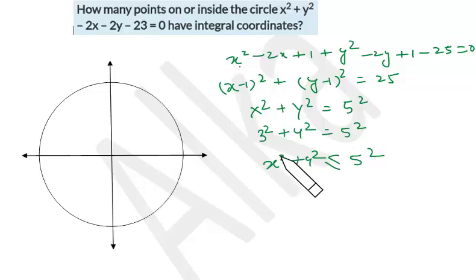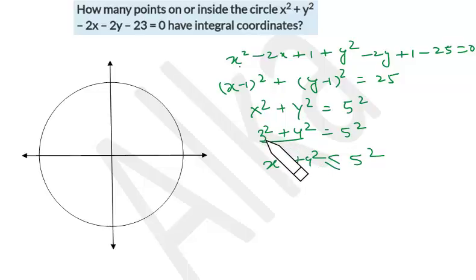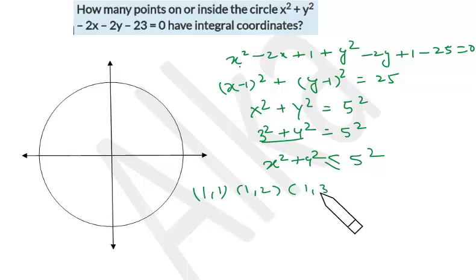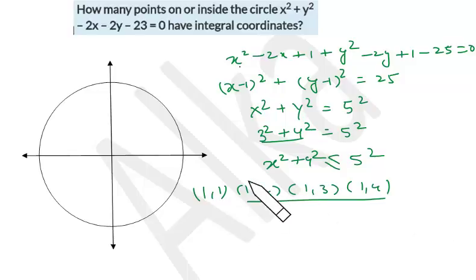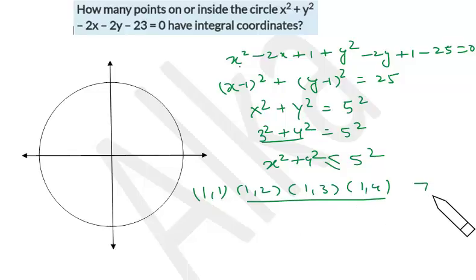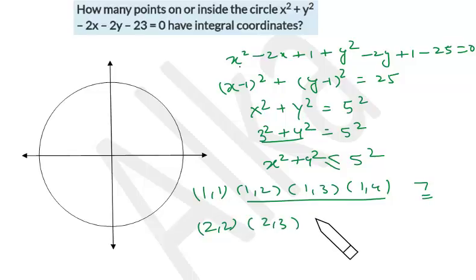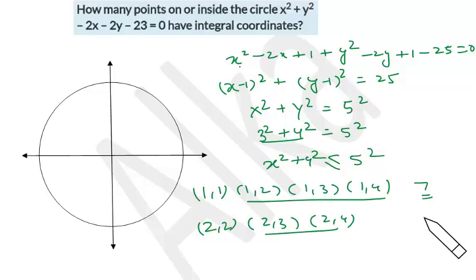For x² + y² ≤ 5², starting with x = 1: points (1,1), (1,2), (1,3), (1,4) work — and these can also be written as (2,1), (3,1), (4,1), giving 3×2 + 1 = 7 points. Starting with x = 2: points (2,2), (2,3), (2,4) and (3,2), (4,2) give 2×2 + 1 = 5 points.